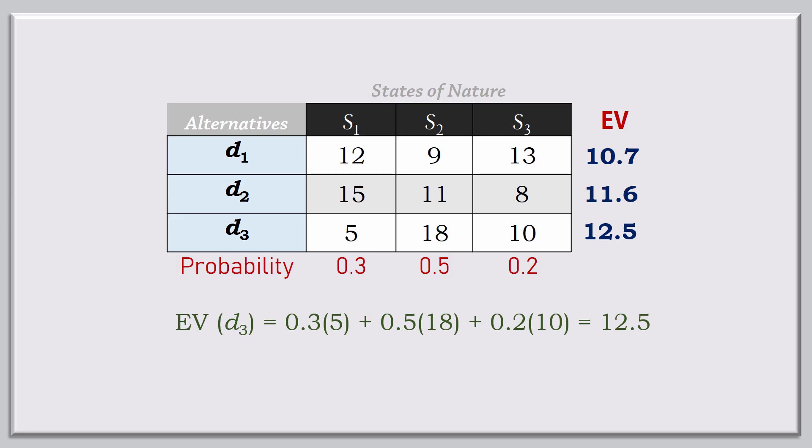Since the payoffs are costs, we make decisions by choosing the alternative with the lowest expected value. And that in this case is 10.7. So the decision is to choose D1.